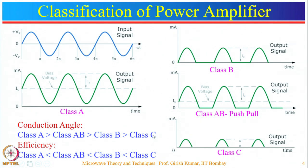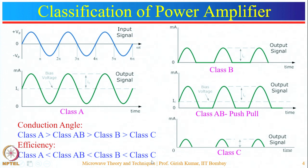Comparing these amplifiers: the conduction angle is maximum for class A at 360 degrees and minimum for class C at around 10 to 20 degrees. In terms of efficiency, class A is minimum at about 20 to 25 percent, and class C is maximum at around 95 percent, making class C the most efficient power amplifier among these three classes.